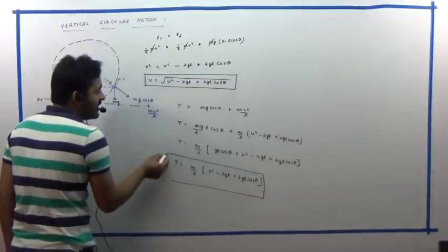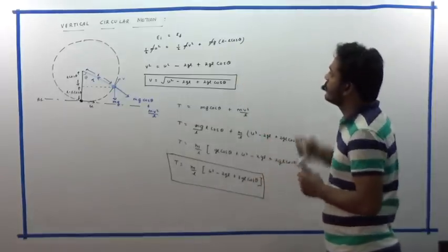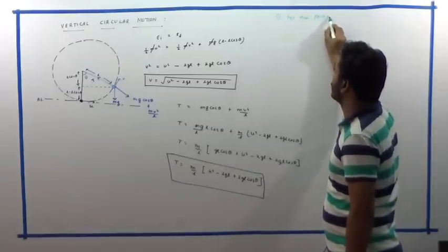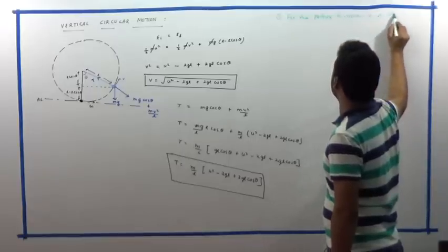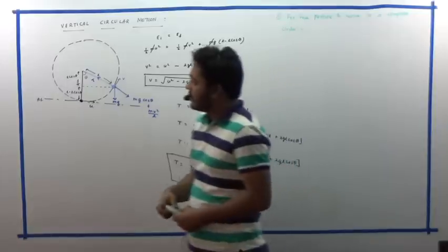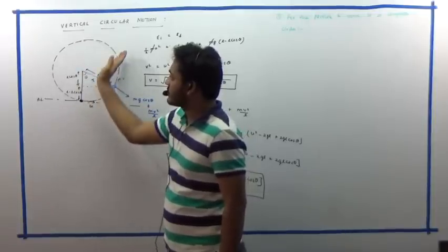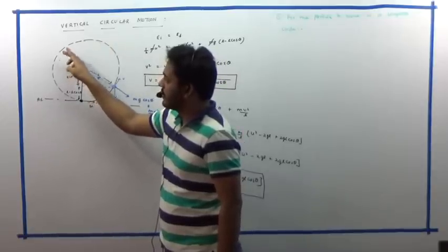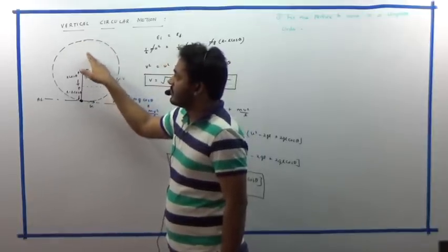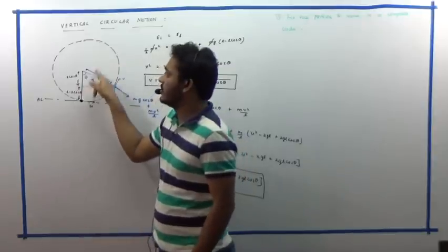Suppose we want the condition for the particle to move in a complete vertical circular path. For a complete circle, after crossing the bottom and reaching the top, the string must not go slack. If the string slackens, the particle follows a parabolic path and cannot complete the circle. So at the highest point, the weight must be balanced by mv²/R, meaning tension can be set to zero at θ = 180°.